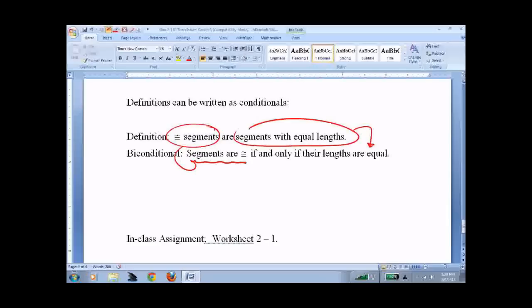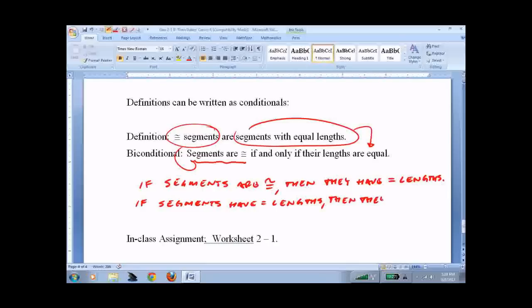Let's write it as a conditional: if segments are congruent, then they have equal lengths. That's a definition. You can write a statement, you can write its converse.